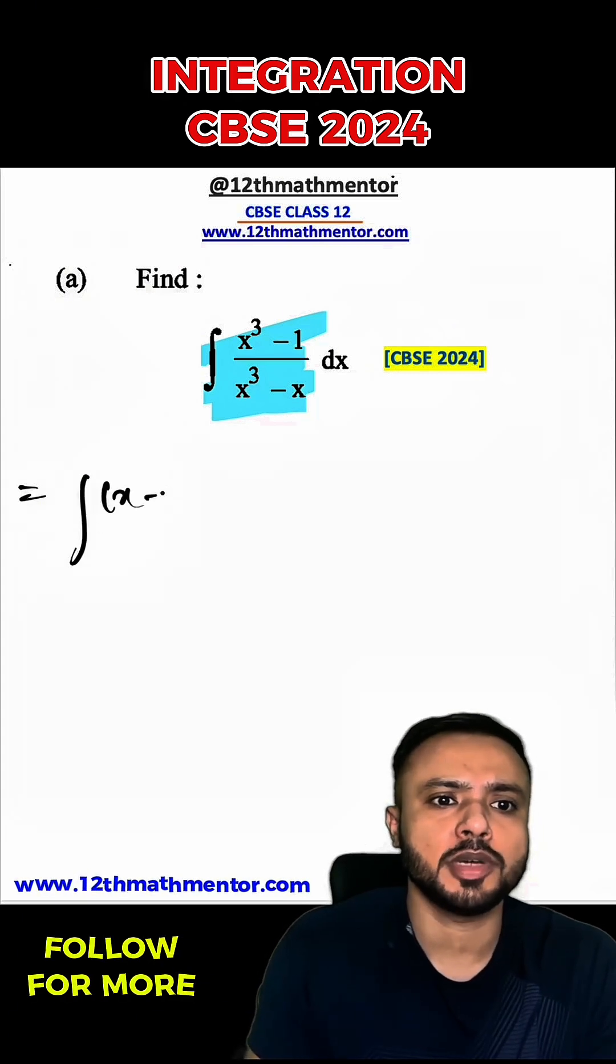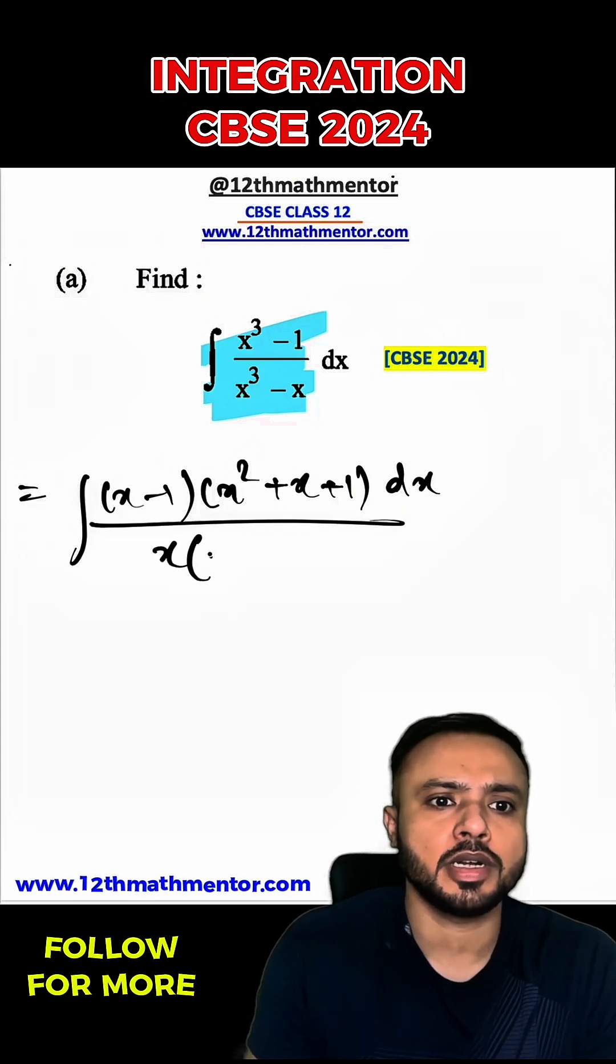So I can write it as x minus 1 into x square plus x plus 1 dx. And in the denominator, I'm going to take x common, so I can write it as x into x square minus 1.